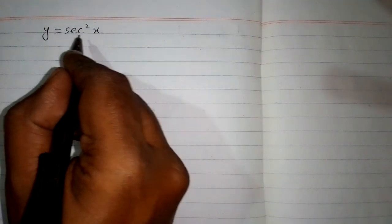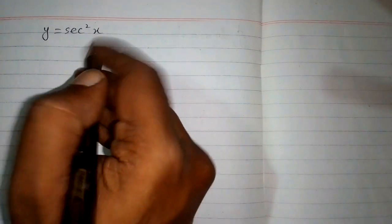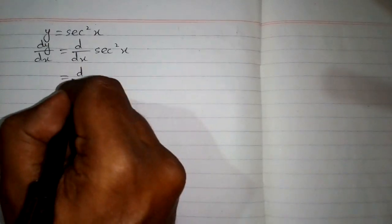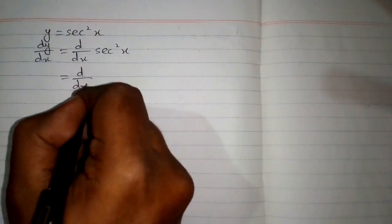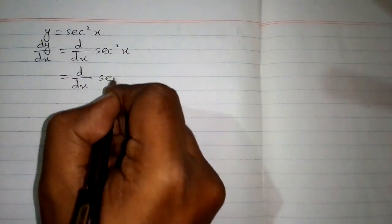In this video we will find the derivative of the function y = sec²(x). First we will differentiate both sides with respect to x. So we have dy/dx equal to dy/dx of sec²(x), which can be written as dy/dx of (sec(x))².